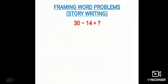This is about how to find out answers of word problems. Now let's see how you can frame word problems — you can also call it story writing. Different word problems can be found for a single subtraction fact. Let's take an example. Suppose the subtraction fact given to you is 30 minus 14 is equal to dash — you have to find out. But here you have to frame the word problem.